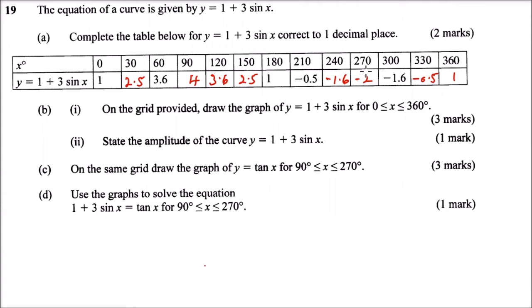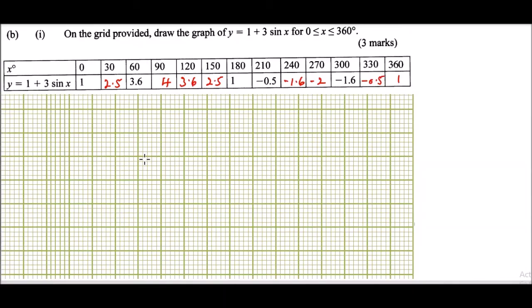Part B: on the grid, draw the graph of y equals 1 plus 3 sin x for 0 ≤ x ≤ 360 degrees. I have already inserted the table of values to use to plot the graph, and I have a grid here. The highest value of y is 4 and the lowest is minus 2.